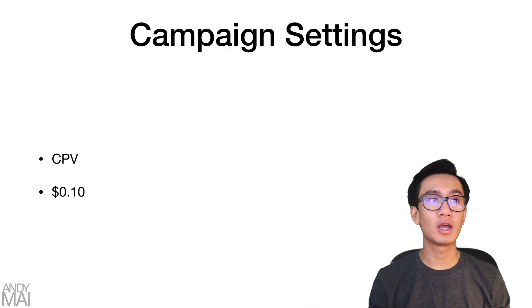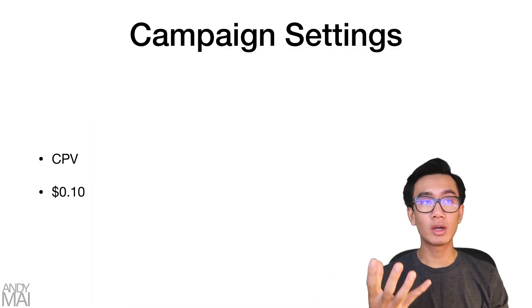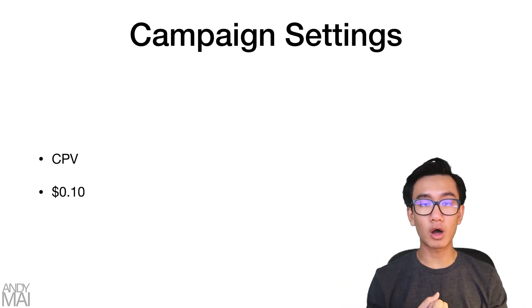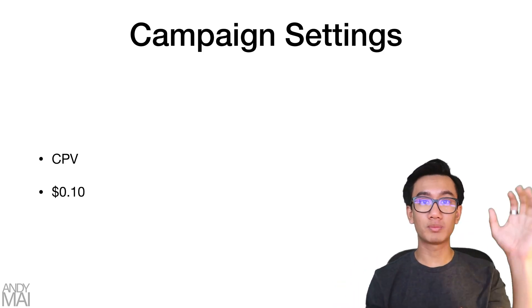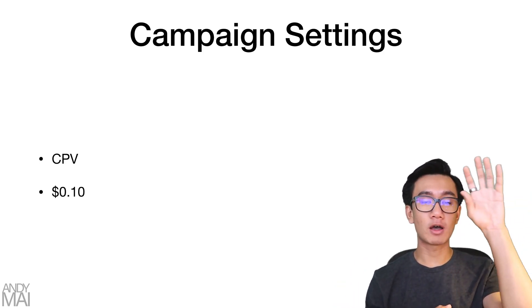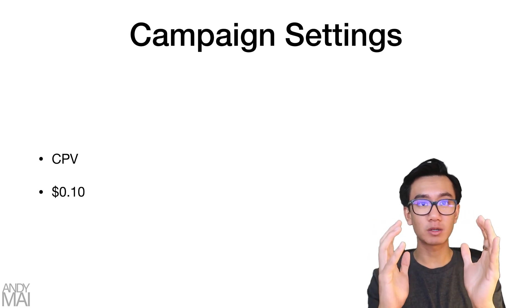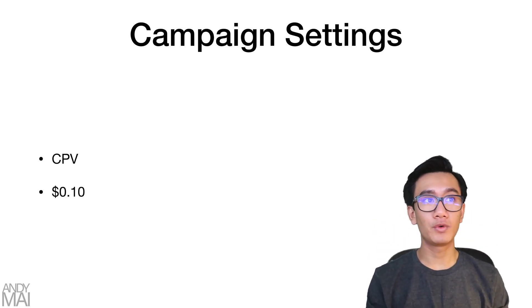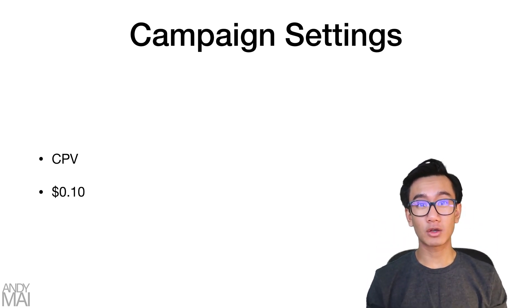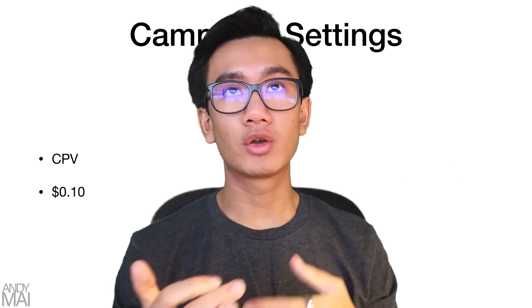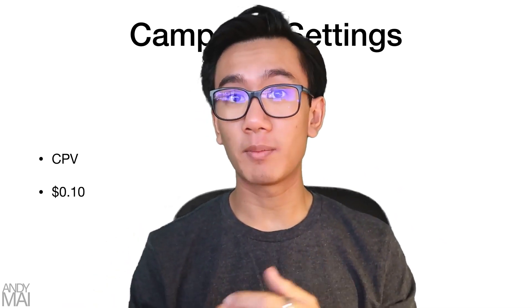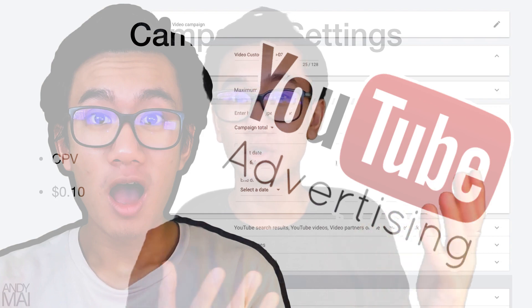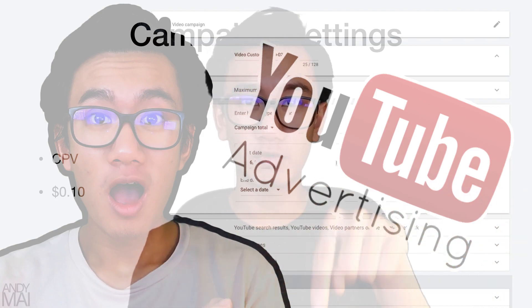For the campaign settings, you want to do a video campaign, choose the customizable option, don't optimize for sales — go with the last custom option — and optimize for cost per view. Set your cost per view at 10 cents. If you want more in-depth settings, there's a video roughly three to four videos before this one showing the whole campaign setup.